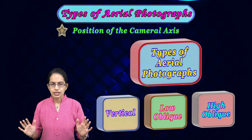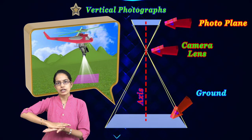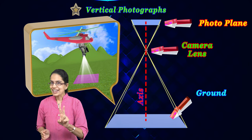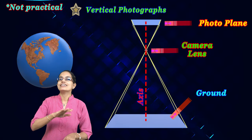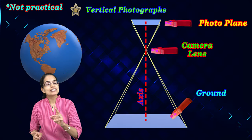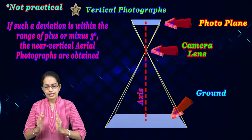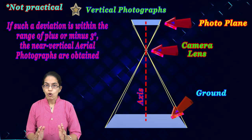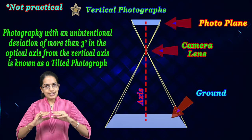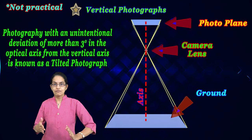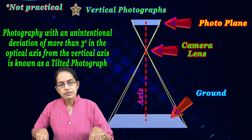Based on the position of the camera axis, we have three types: a vertical photograph, a low oblique, and a high oblique. In a vertical photograph, the camera is vertically above the ground surface, so a very small area is captured. In reality, this is not practical — there would be ground distortion, and the Earth is curved. If this distortion is less than three degrees, it is a near-vertical image; if more than three degrees, it is a tilted photograph. So practically, a perfect zero-degree vertical is not achievable, and it covers a very small area.